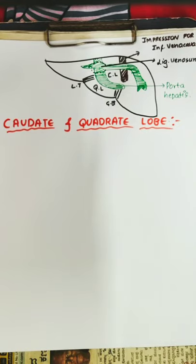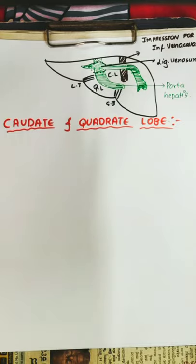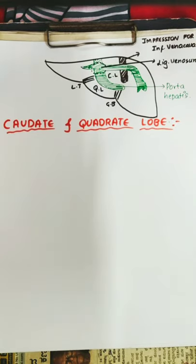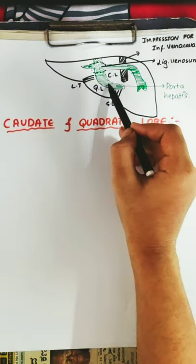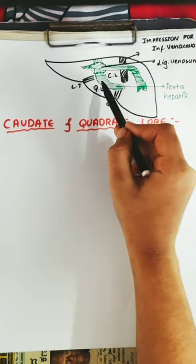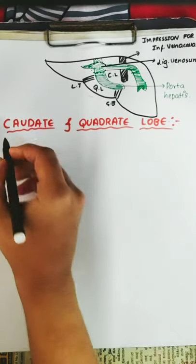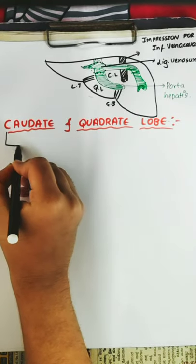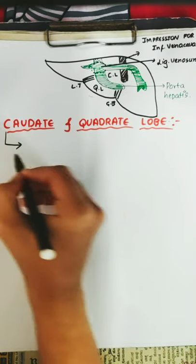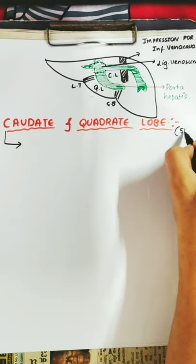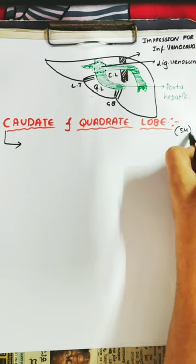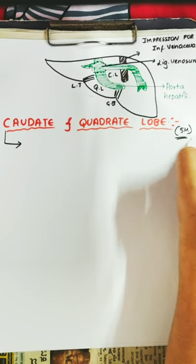Hello students, this is liver anatomy part 2 where we will be discussing about the caudate as well as the quadrate lobe. So this is the caudate lobe and this is the quadrate lobe. We will discuss briefly about these two lobes, as this is very important — usually asked for 5 marks.